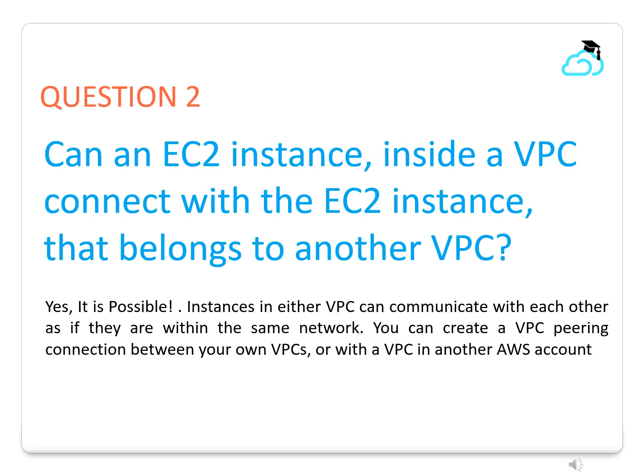Question 2. Can an EC2 instance inside a VPC connect with an EC2 instance that belongs to another VPC? Yes, it is possible. Instances in either VPC can communicate with each other as if they are within the same network. You can create a VPC peering connection between your own VPCs, or with a VPC in another AWS account.